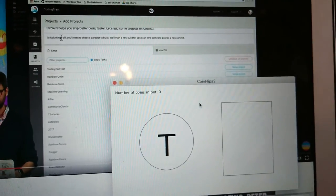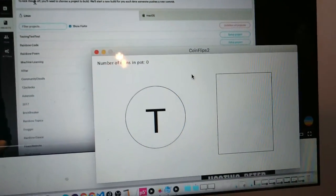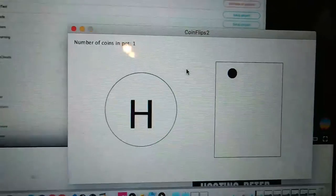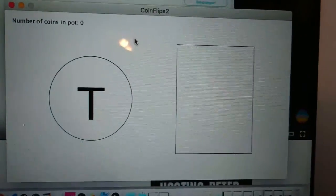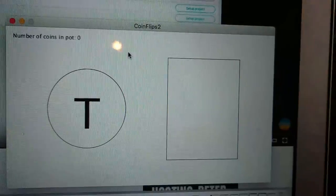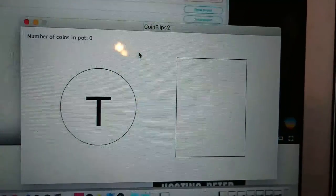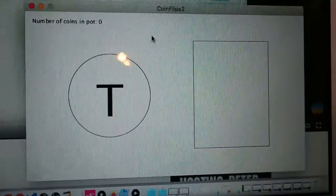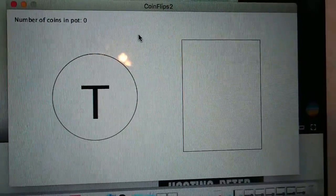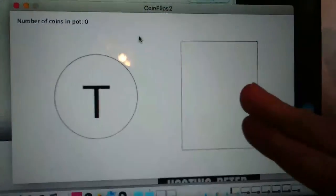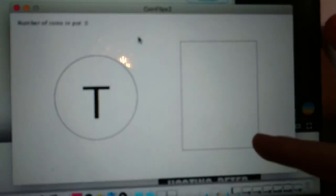The way the game works is you actually just start with one coin in the pot, and then you click. Clicking is tossing, right? Yeah. If you get tails, then you get that money.